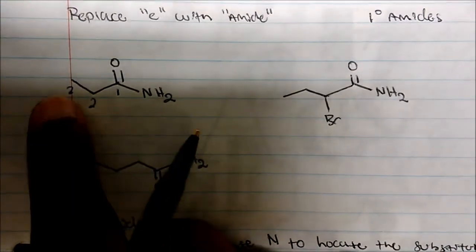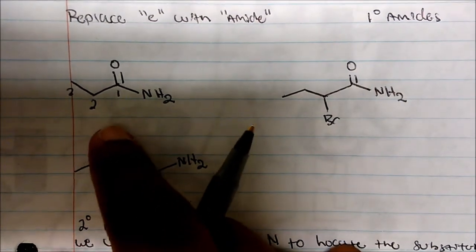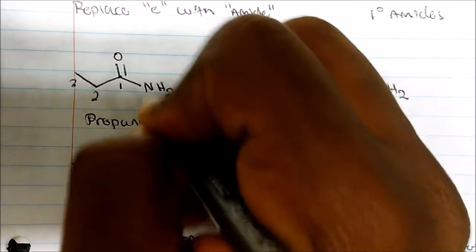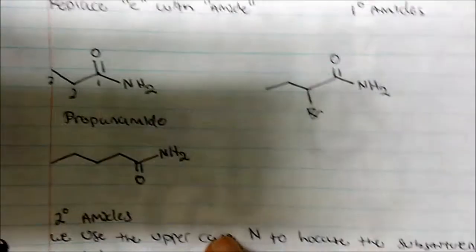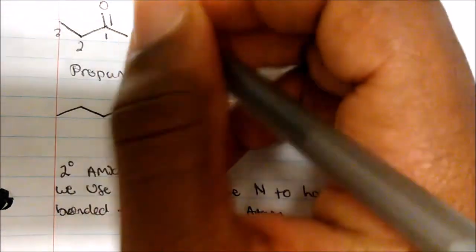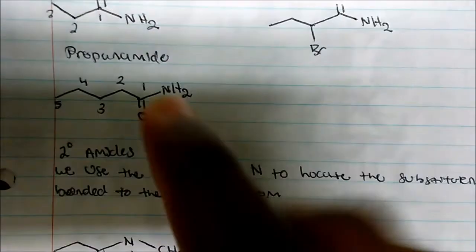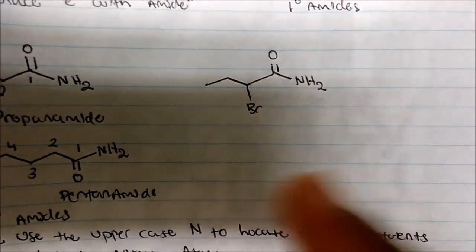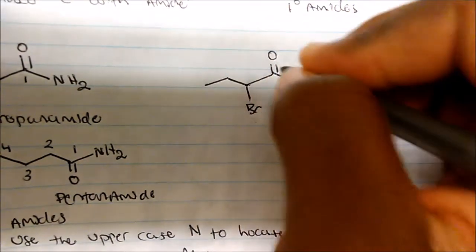Starting from the carbonyl carbon: one, two, three — that's propane, but because we're dealing with an amide, it becomes propanamide. For the next example, counting the longest continuous carbon chain from the carbonyl: one, two, three, four, five — so this would be pentanamide.